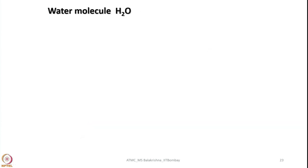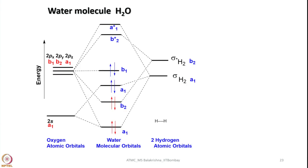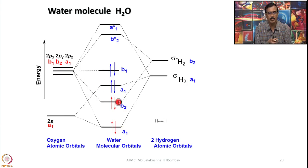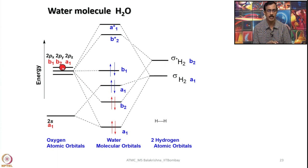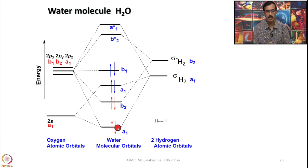Now let us write the MO diagram for the water molecule. Oxygen comes with 6 valence electrons (s²p⁴), and the two hydrogens together contribute 2 electrons via ligand group orbitals — giving 8 electrons total. Placing these 8 electrons: 2 here, 2 here, 2 here, and 2 here. Two pairs are responsible for making the two O-H bonds, while the other two pairs are essentially the lone pairs on oxygen.